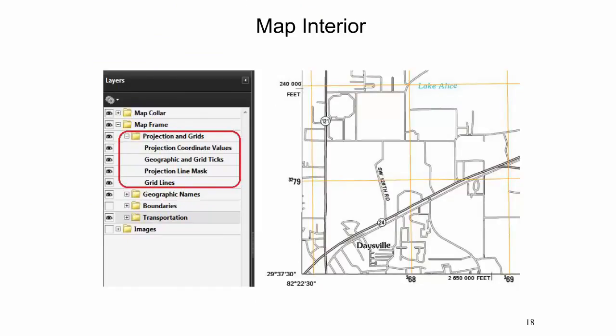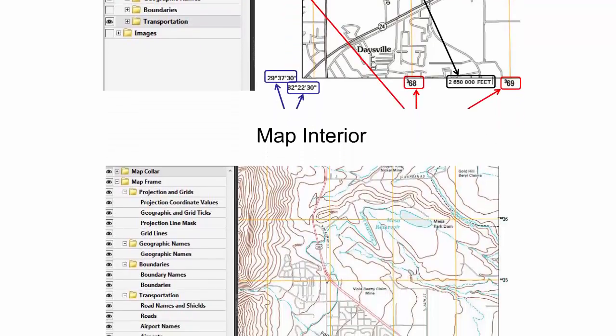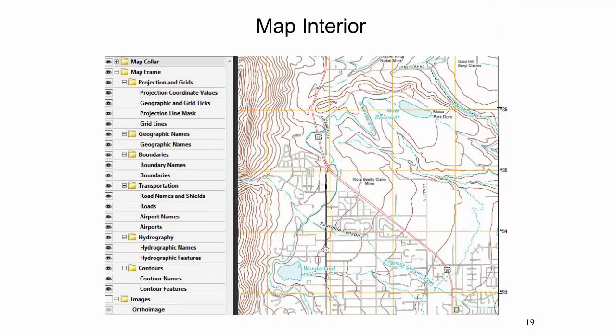The map interior refers to the actual map content inside the projection line and data related to cartographic coordinate systems. The Projection and Grids folder contains layers that facilitate coordinate reading, such as coordinate labels and tick marks along the projection line. All maps show a 1,000-meter UTM grid in orange, with coordinate labels along the projection line, and state plane coordinate ticks at a 10,000-foot interval. Geographic coordinates are shown at the corners of the projection line. US Topo quadrangles include contours, hydrographic features such as lakes and rivers, roads, boundaries, and geographic names. Additionally, structures such as fire stations and land cover such as woodland tint are being added as maps are updated. These data layers come from different sources listed in the map collar.